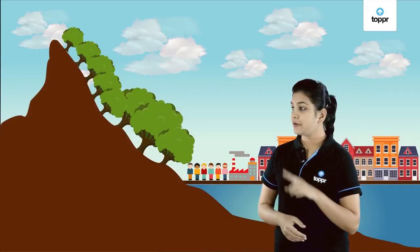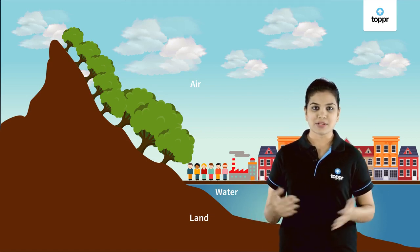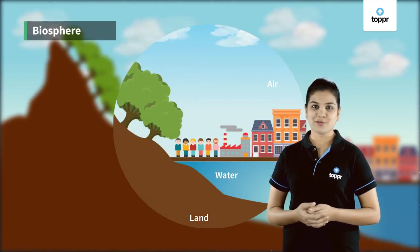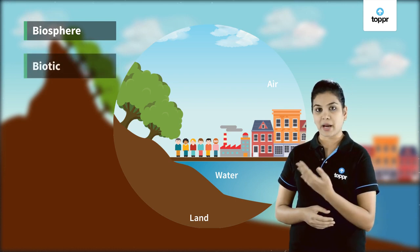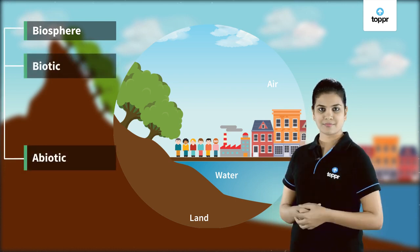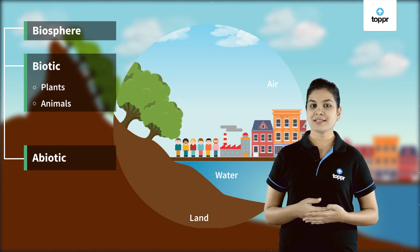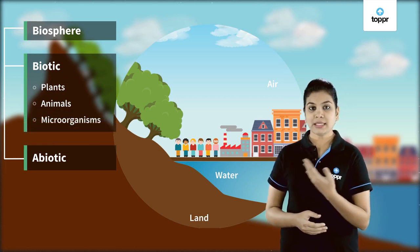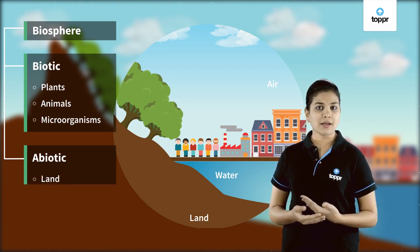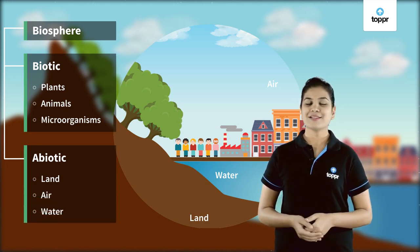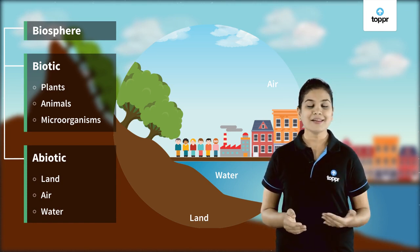Living things are found where these three exist, and their interaction forms a zone where life is possible — this zone is called biosphere. Now the biosphere is again divided into two major components: biotic and abiotic. The biotic components are the living things such as plants, animals and microorganisms, while the abiotic components are the non-living things of the biosphere such as land, air and soil. In this lesson you are going to learn about the abiotic factors such as air in detail.